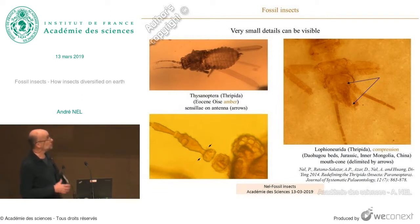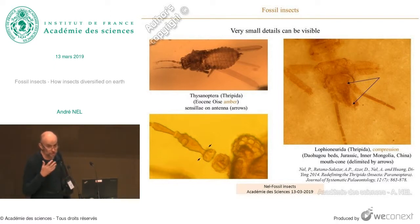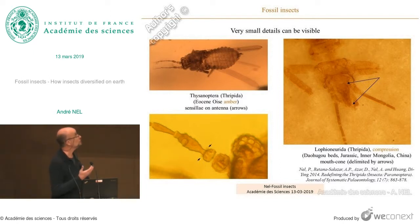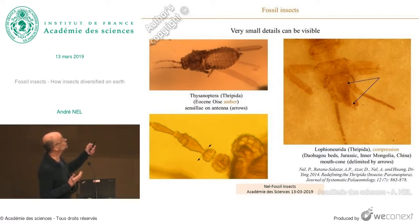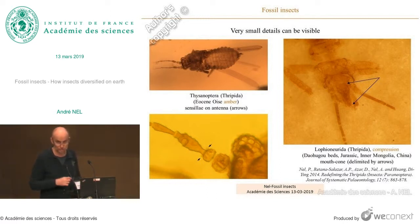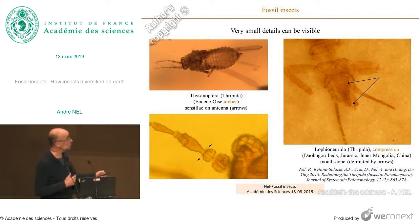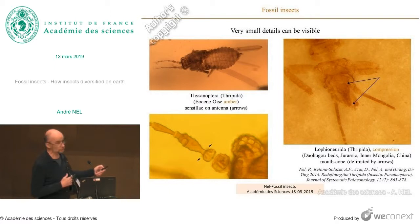Regarding preservation quality — for studying insects we need to see very small, very tiny structures. In amber, preservation can be exceptional: you can see setae on an antenna of a very small Thysanoptera, which is itself only one millimeter long. Even in rocks, in some outcrops, although compressed in two dimensions, you can see detailed structure and reconstruct, for instance, the mouth parts of Thysanoptera.